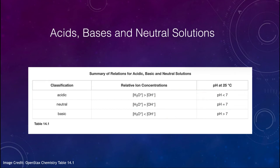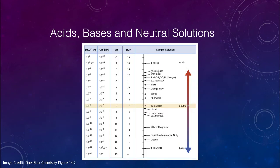We can look at a range of pH values going from a pH of negative one all the way up to a pH of 15. The pOH and pH always add together to give you 14, so if you know one you automatically know the other. We generally work with pH — the pOH is just the complement of that.